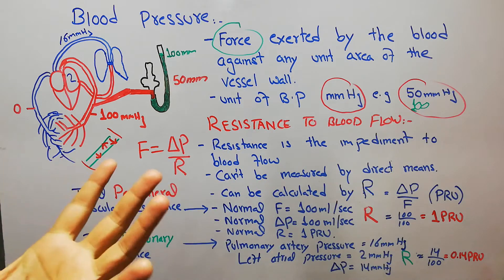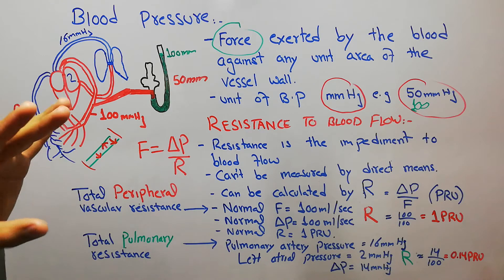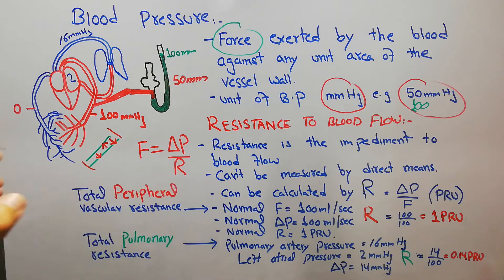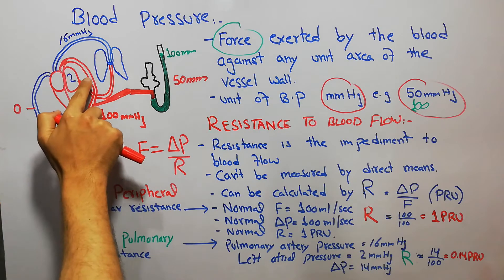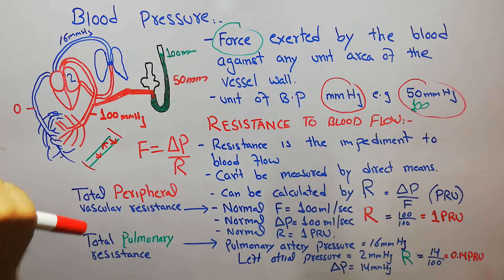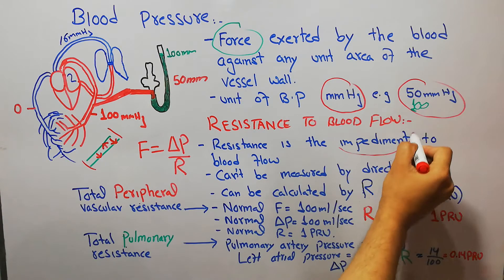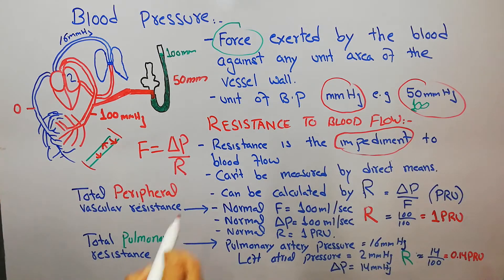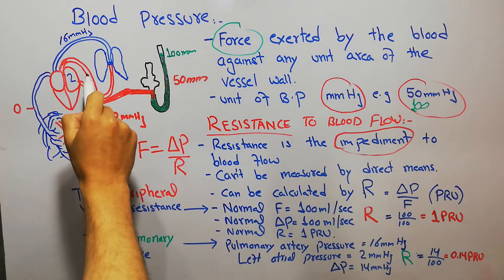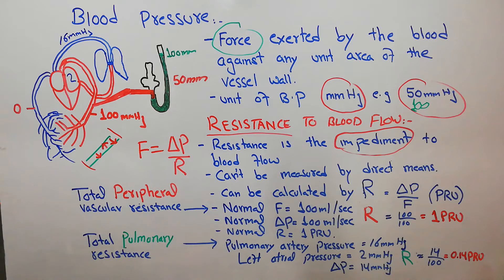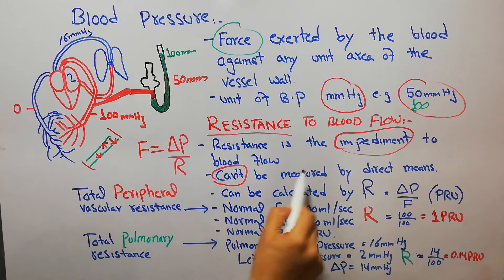Impediment means a difficulty or opposition against which the blood has to flow. If the blood is flowing and the vessels are resisting or impeding that flow, this impediment to the flow of blood is known as resistance to blood flow. Resistance is present in the vessel walls and cannot be measured directly by any means.